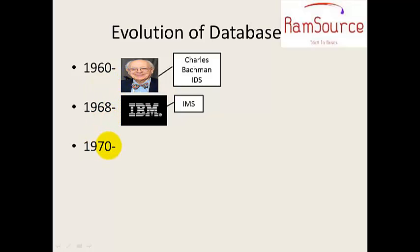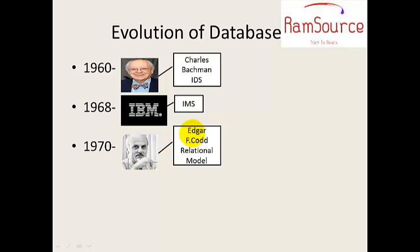In 1970, Edgar F. Codd, an IBM employee, proposed the relational model. IDS comes under the network model, while IMS is a hierarchical model.